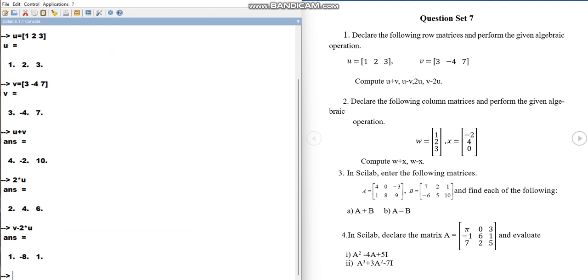Now in the second question, we are asked to declare a column matrix and perform the algebraic operation which are given. Now for declaring a column matrix, as you can see, it is a column matrix of order 3 by 1. That means 3 rows and 1 columns.